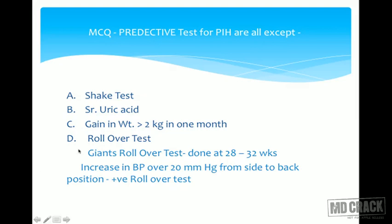An MCQ format: predictive tests for PIH include serum uric acid, weight gain more than 2 kg per month, and rollover test. Shake test is NOT related to PIH — it is used to assess fetal lung maturity — so shake test would be the answer to 'except' type questions. Serum uric acid is a valid screening test. Weight gain due to edema is more in PIH patients.